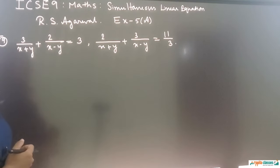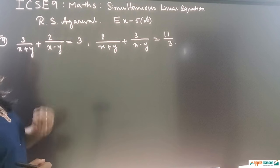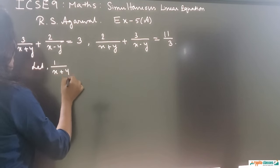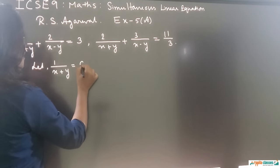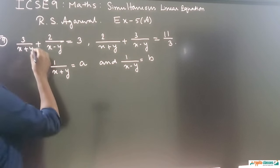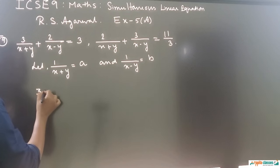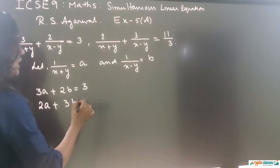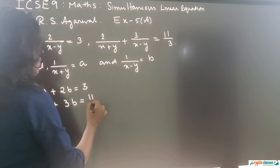Question number 19 is: 3 upon (x+y) plus 2 upon (x−y) is equal to 3, and the second equation is 2 upon (x+y) plus 3 upon (x−y) is equal to 11 upon 3. Here the variables are at the denominator, so we let 1 upon (x+y) equal to A and 1 upon (x−y) equal to B. The equations become 3A plus 2B equals 3 — equation 1 — and 2A plus 3B equals 11/3 — equation 2.